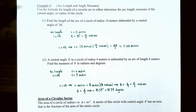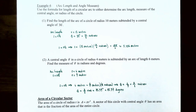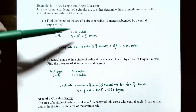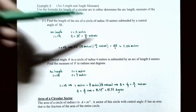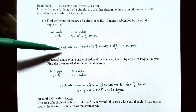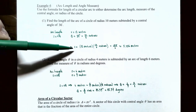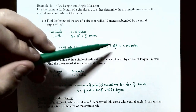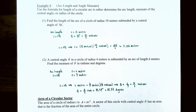Example four: arc length and angle measurement. Number one: find the length of the arc of a circle of radius 10 meters subtended by a central angle of 30 degrees. First convert 30 degrees to radians: 30 times pi over 180 equals pi over 6 radians. Then the arc length s equals r times theta equals 10 meters times pi over 6, which gives 10 pi over 6, approximately 5.236 meters.